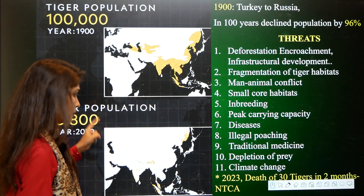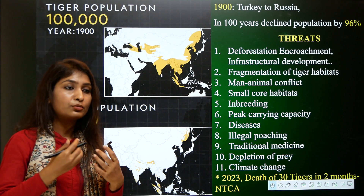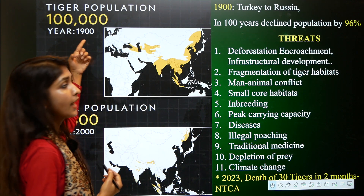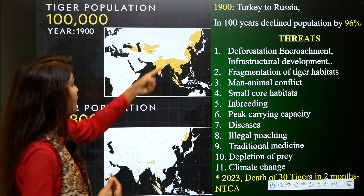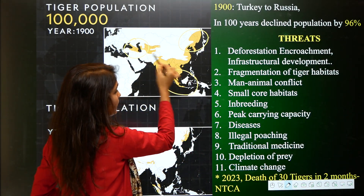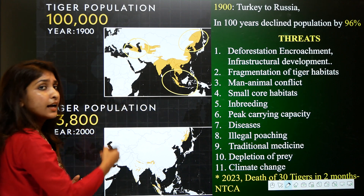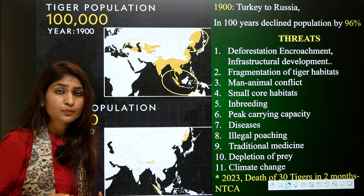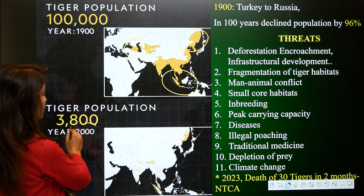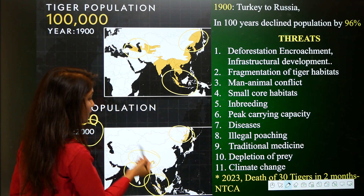Now, the demography of tiger population: in the 1900s there were 1 lakh (100,000) tigers spread from Turkey to the Siberian region and deep into Southeast Asia. In the 2000s — within 100 years — the population declined by 96%. By the 2000s, tiger populations were found only in bits and pieces in the Indian subcontinent, the Siberian region, and Southeast Asia.